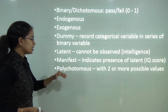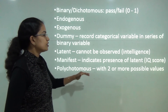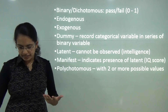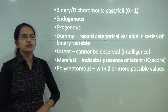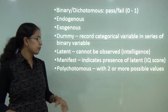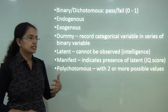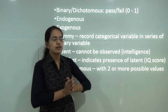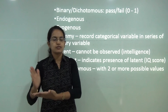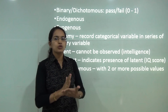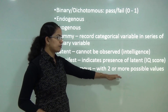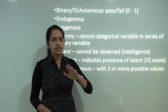Finally, you have polychotomous data, where you have two or more possible values. Under dichotomous we say just pass or fail, yes or no. However, under polychotomous, for example, students can be graduates, postgraduates, and PhD scholars — more than two values to explain the variable.